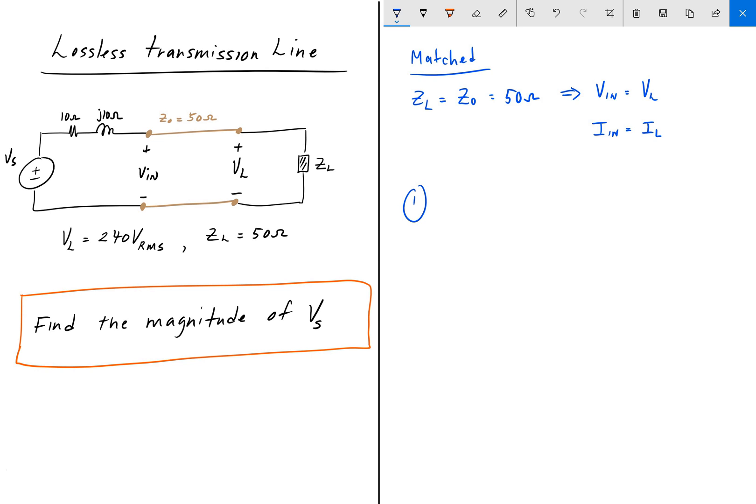And so the circuit then just becomes your source Vs, your input impedance 10 ohms and J10, and your Zl which is just a resistor of 50 ohms. We have here Vout, or we can call it Vl still. We'll change it to Vl.